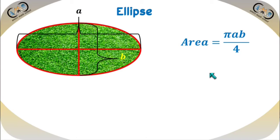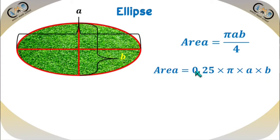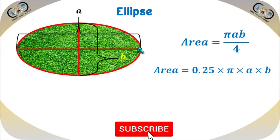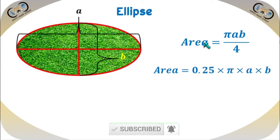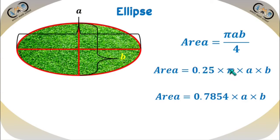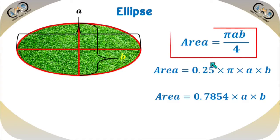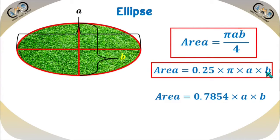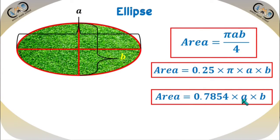If we want to apply it in a more specific way, another form of this formula is 1/4 times pi times A times B, which is 0.25 times pi times A times B. If we want to measure this type of length, just find the two lengths A and B and apply this formula to find the area. If we multiply these values, that will be approximately 0.7854 times A times B. This formula is easy to use, so that is why we use this one.